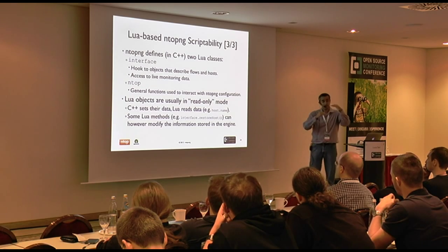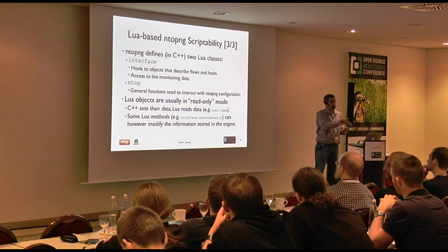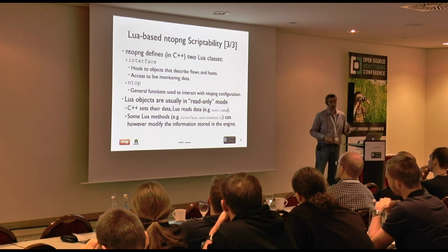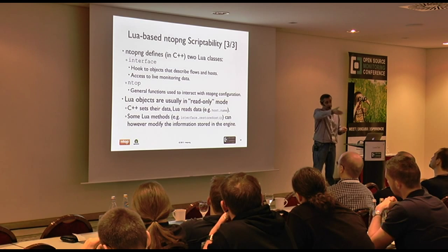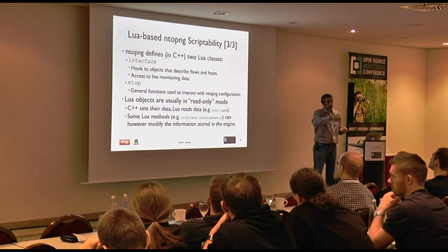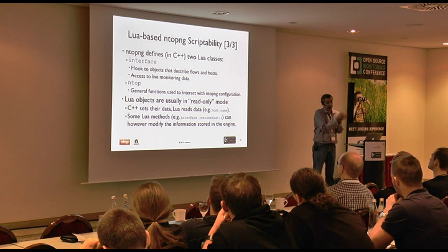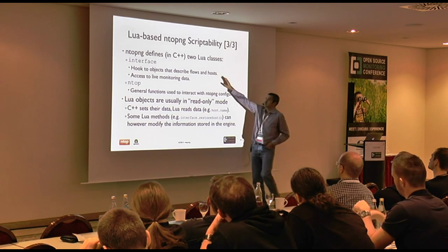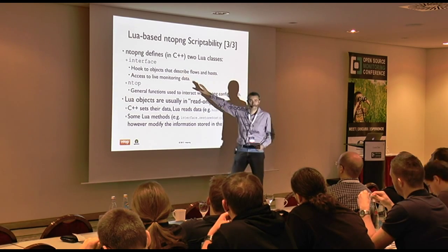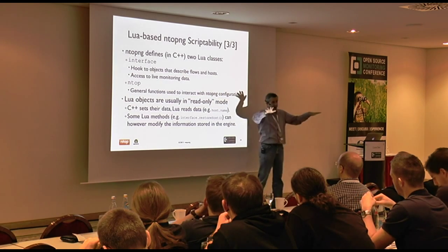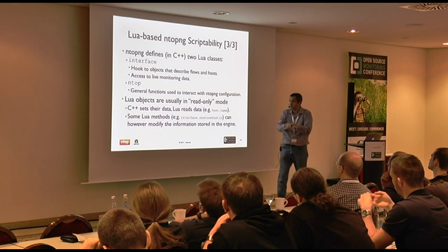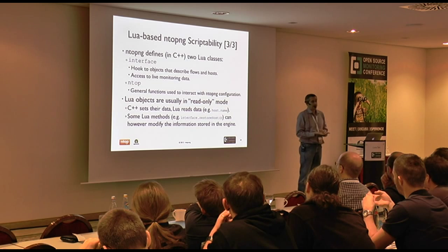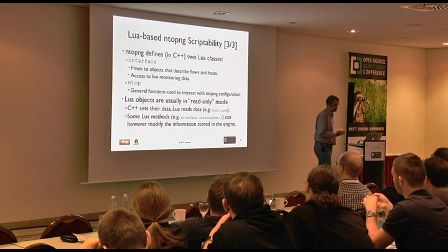NTOP defines two main classes. One is the interface class — giving information about a specific interface. Today I'm monitoring just one device, the Wi-Fi, but you can monitor multiple links, each defined as an interface: ETH0, ETH1, etc. This gives you information about flows and hosts on the interface, allowing you to monitor two interfaces simultaneously with an aggregated view. Then there is the NTOP class giving general information about NTOP configuration.